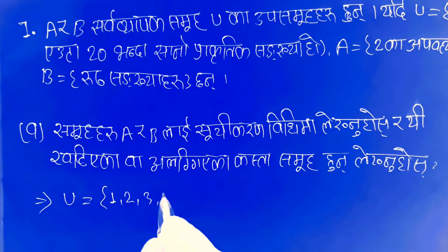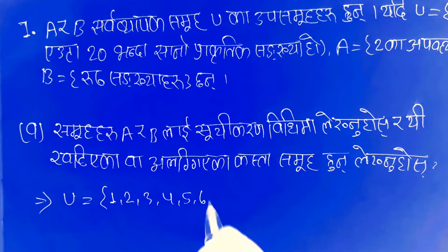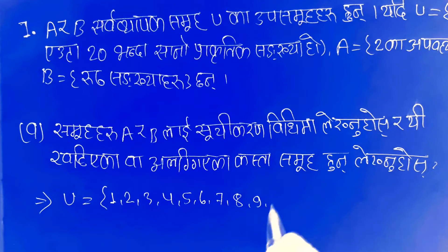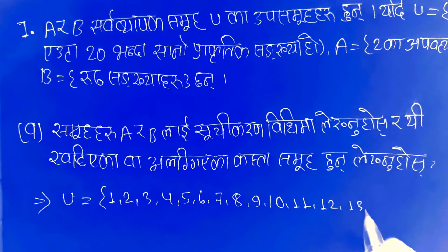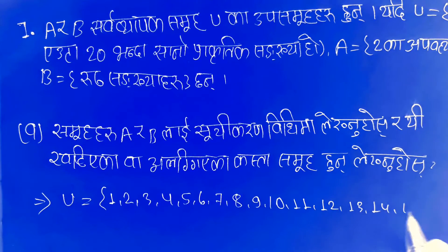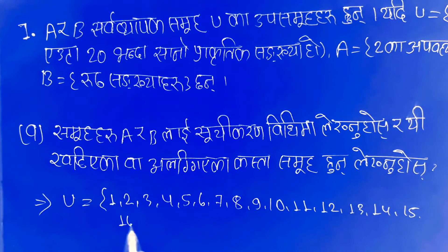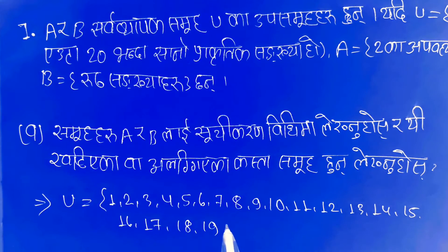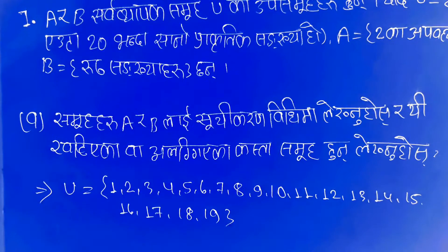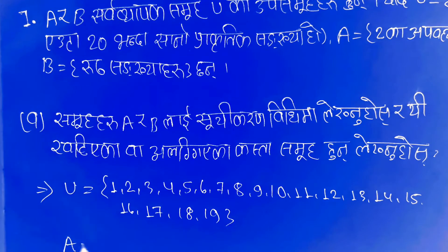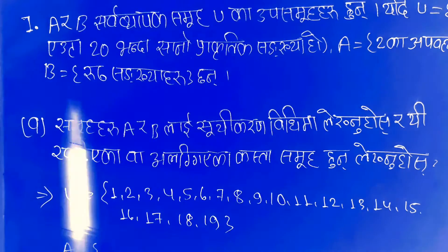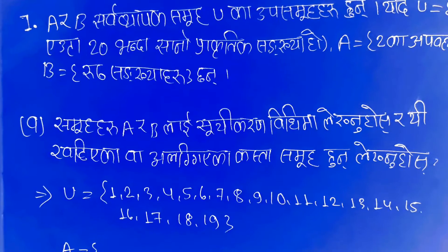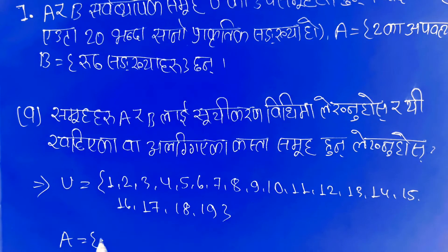1, 2, 3, 4, 5, 6, 7, 8, 9, 10, 11, 12, 13, 14, 15, 16, 17, 18, 19, 20. A is the same, U is the same. 2 is the same.